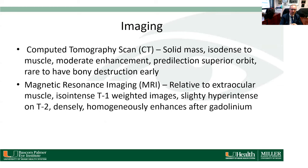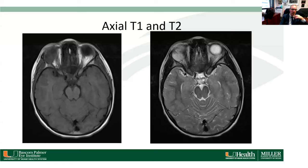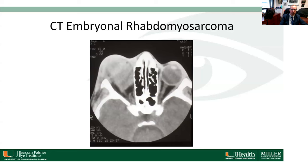MRI is the preferred imaging modality. When I first started working we did CT scans often because MRI wasn't available. On MRI, these tumors are relatively isodense on T1-weighted images and slightly hyperintense on T2. You can see here T1 and T2 of a rhabdomyosarcoma of the right orbit — isointense on T1 and slightly hyperintense on T2.